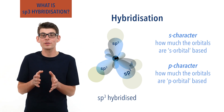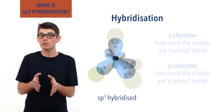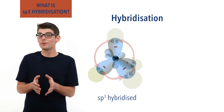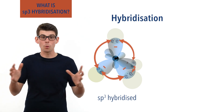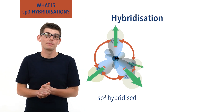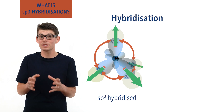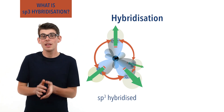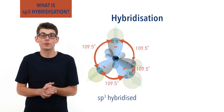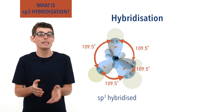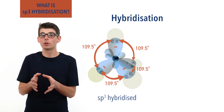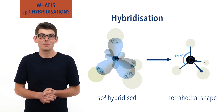As the orbitals are all the same energy, the electrons inside them will cause equal repulsion between all four, meaning the orbitals try to get as far away from each other as possible and end up pointing away from one another with the maximum possible distance between them. This gives an angle between each of them of 109.5 degrees — a tetrahedral arrangement. The sigma bonds they form therefore have a tetrahedral arrangement around the central carbon atom.